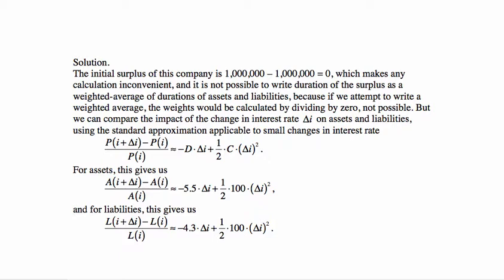And we just write this out for both assets and liabilities, writing A for assets, L for liabilities, and plugging in the duration for assets of 5.5, convexity of assets of 100, duration of liabilities of 4.3, and convexity of liabilities of 100.